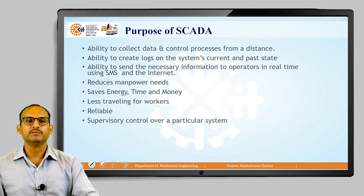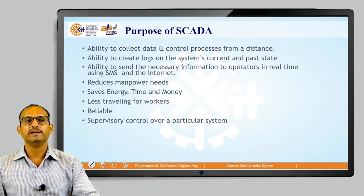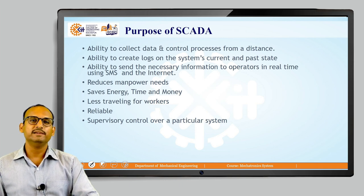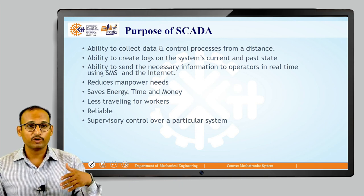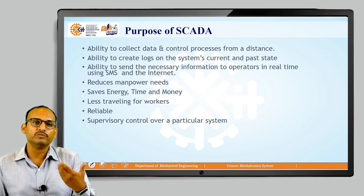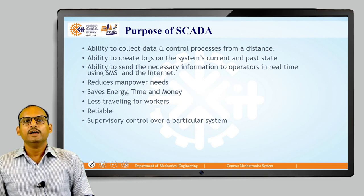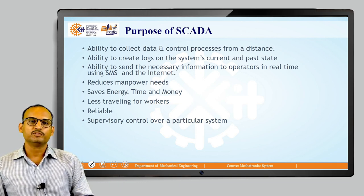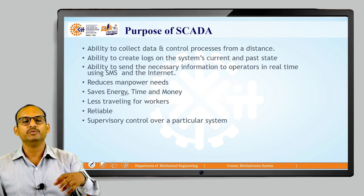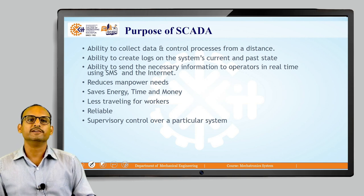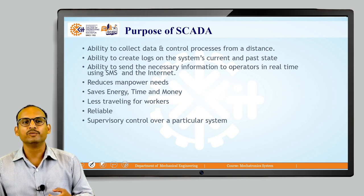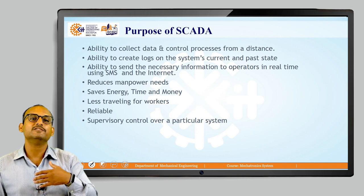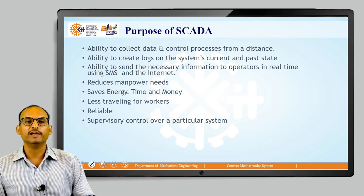It means less traveling for workers — a worker is not required to go to shop number two but can operate directly from the control room. It is more reliable because you can see what is working and what is not from the control room itself. It provides supervisory control over a system — whether it is 10 shops or multiple factories, all data comes to one central control room with supervision over all systems.